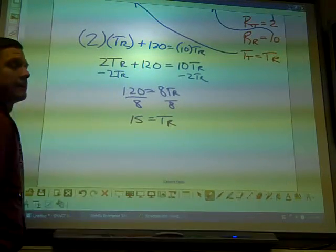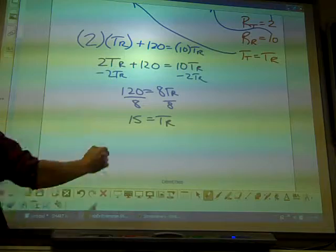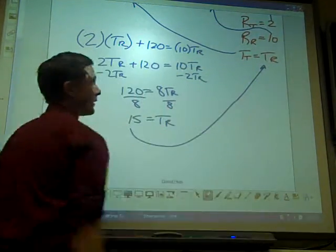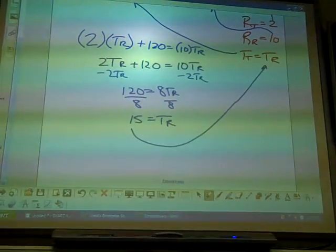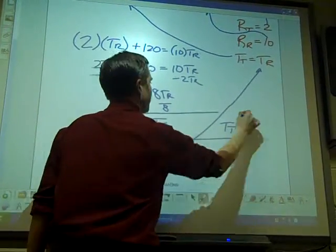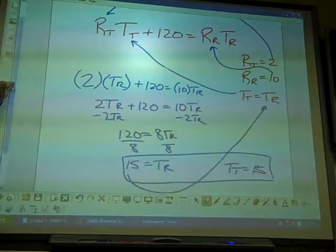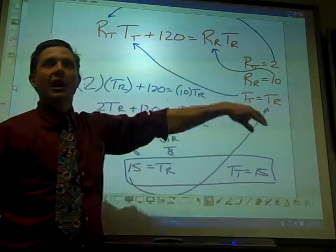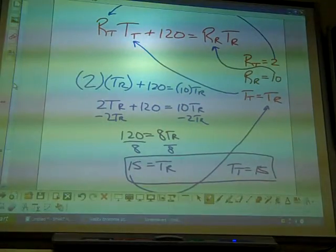So what is T_T? 15. Exactly. I bring it up here. If T_R is 15, T_T is 15. And this time I started with four variables and only two knowns, and I found the other two.